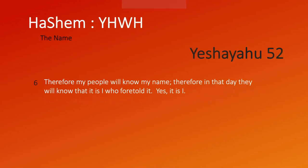Now, 'Hashem' means 'the name.' And when we look at the name, Yod-Heh-Vav-Heh, or Y-H-W-H — Yeshayahu, Isaiah chapter 52 verse 6 says: 'Therefore my people will know my name. Therefore in that day, they will know that it is I who told it.' The Father's name was lost and has been hidden for centuries — hidden by the Jewish leaders who didn't accept the Messiah, who wanted to hide the name of Yah in case it was blasphemed.